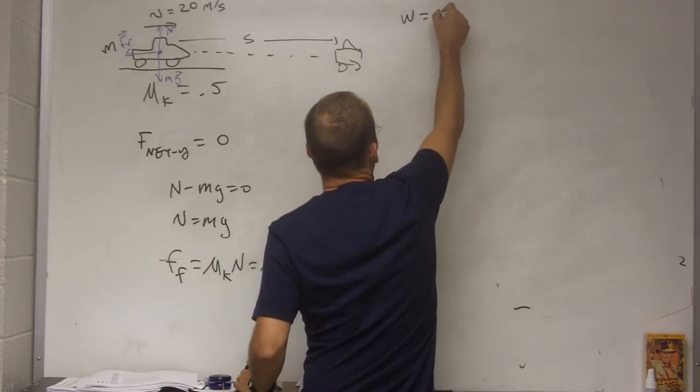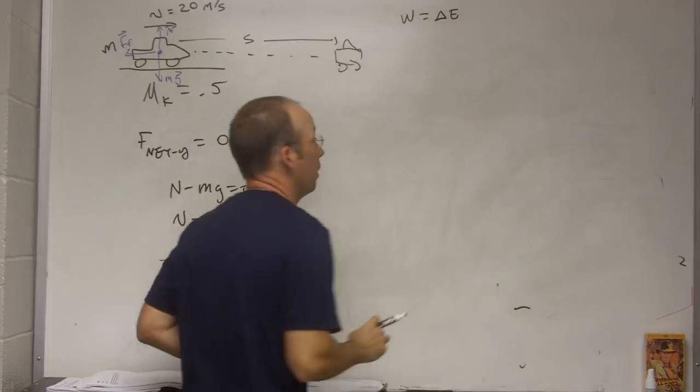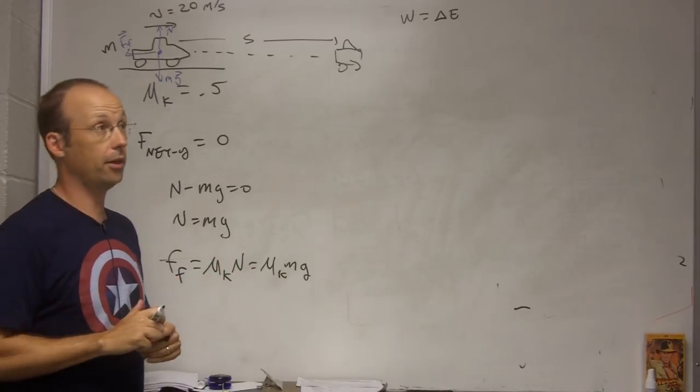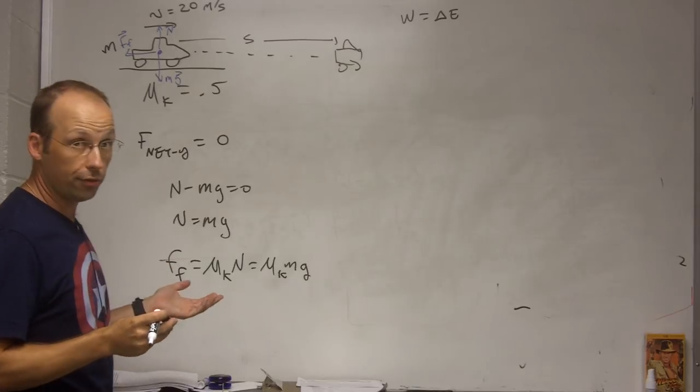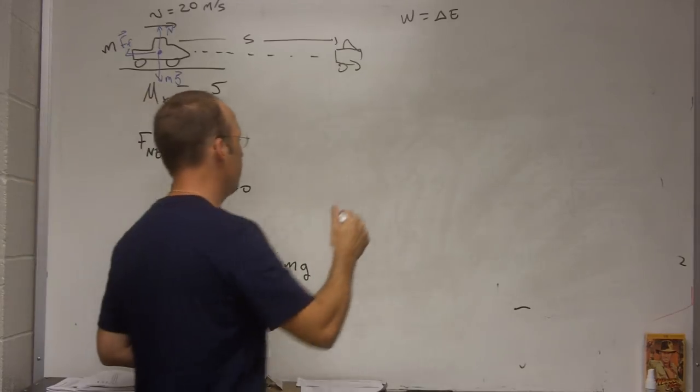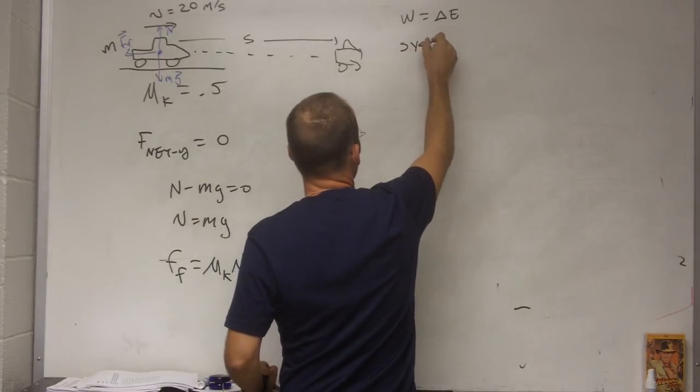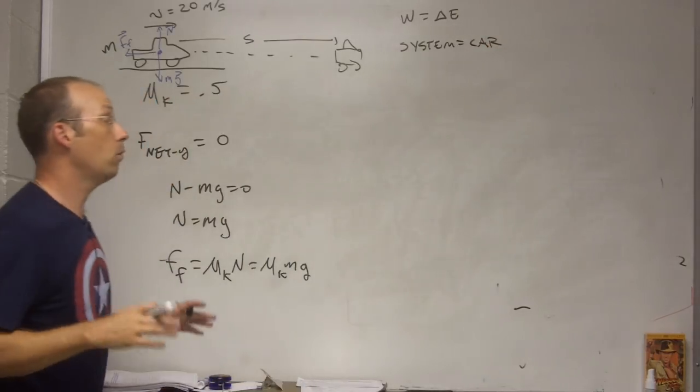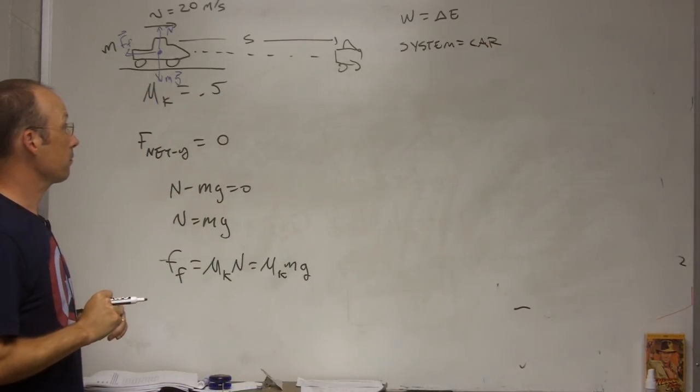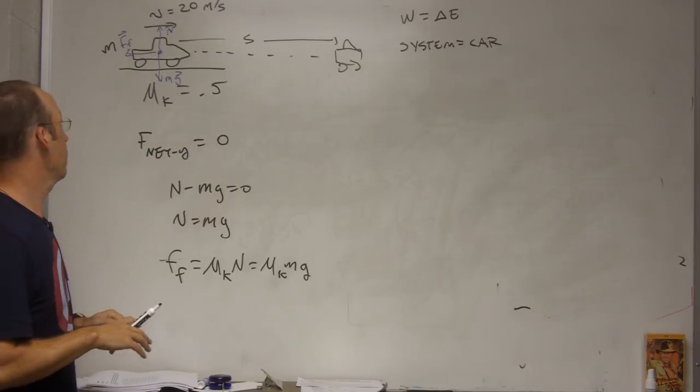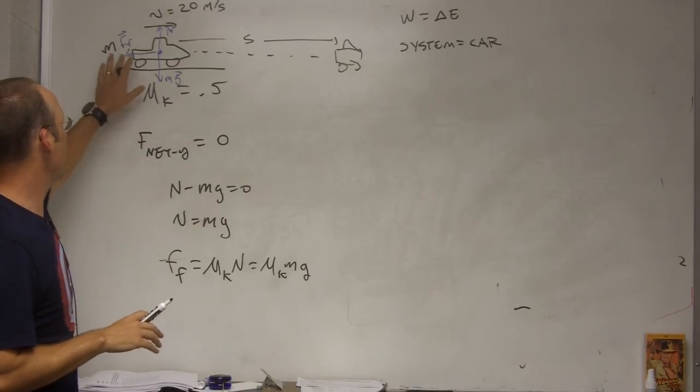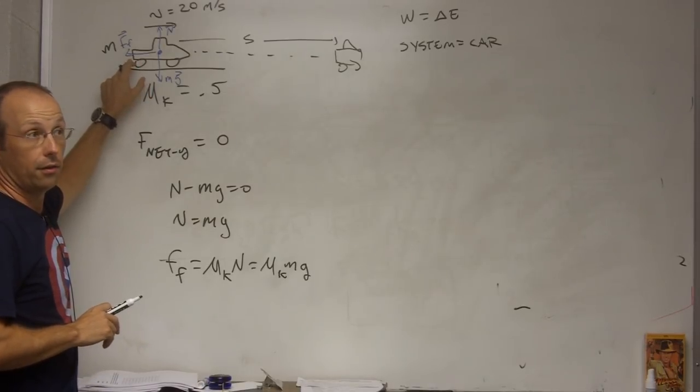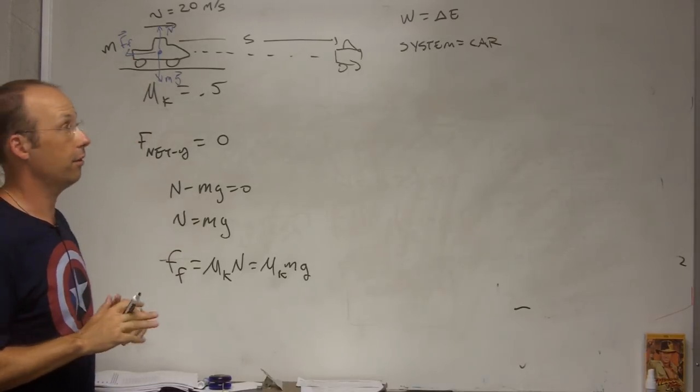So I can use the work energy principle. So I can say, the work done on the car is the change in energy of the car. And now the next thing is, well what's my system? This is an important part that a lot of people skip. I could choose, in this case, let me choose just the car as my system. If you wanted to, you could choose the car plus the earth, but I think in that case, it may be kind of difficult to say whether friction is a force acting on the outside of the system or inside, so I think it's better to do it this way.